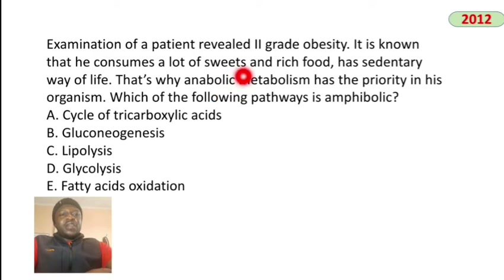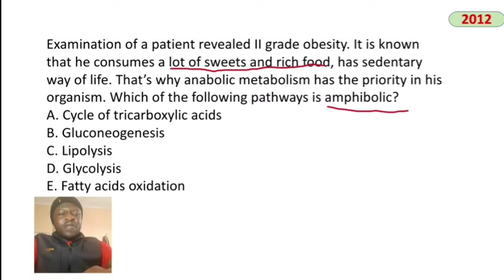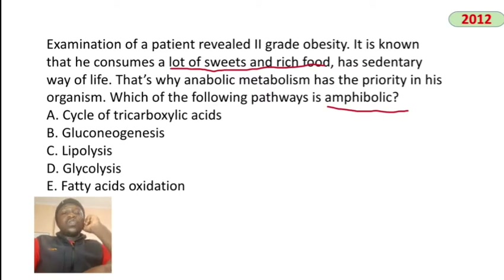A patient with second-grade obesity consumes lots of sweets and leads a sedentary lifestyle — anabolic metabolism has priority. Which pathway is amphibolic? An amphibolic pathway involves both anabolism and catabolism. The main cycle with both processes is the Krebs cycle, also known as the tricarboxylic acid (TCA) cycle.